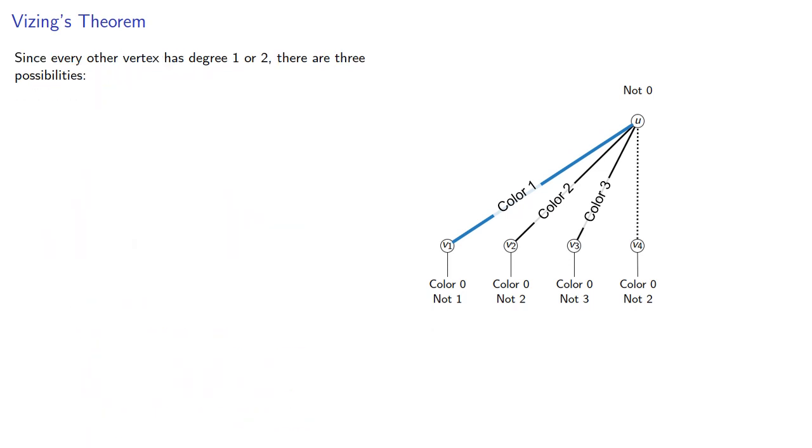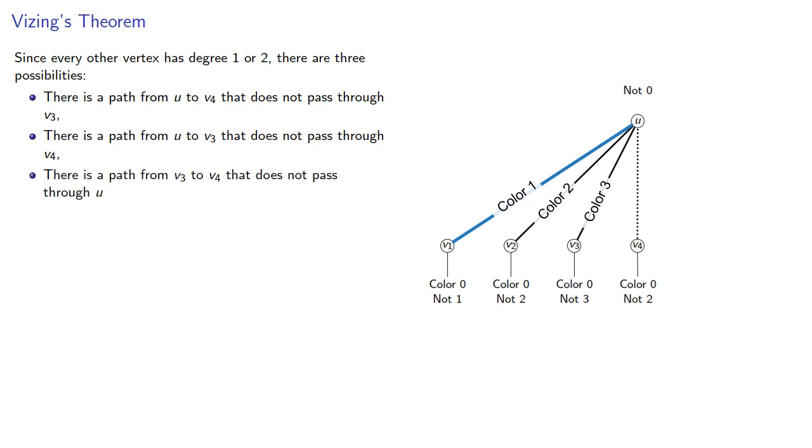Since every other vertex has degree 1 or 2, there are three possibilities. There is a path from u to v4 that does not pass through v3. There is a path from u to v3 that does not pass through v4. Or, there is a path from v3 to v4 that does not pass through u.